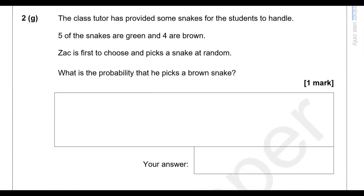The class tutor has provided some snakes for the students to handle. Five of the snakes are green and four are brown. Zach is first to choose and picks a snake at random. What is the probability that he picks a brown snake? There are four brown snakes out of nine in total, so the probability is 4 over 9, expressed as a fraction.